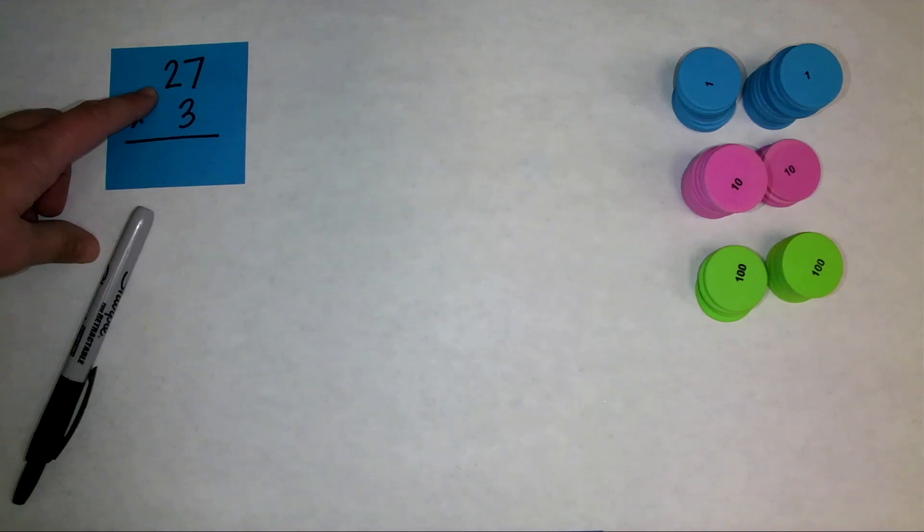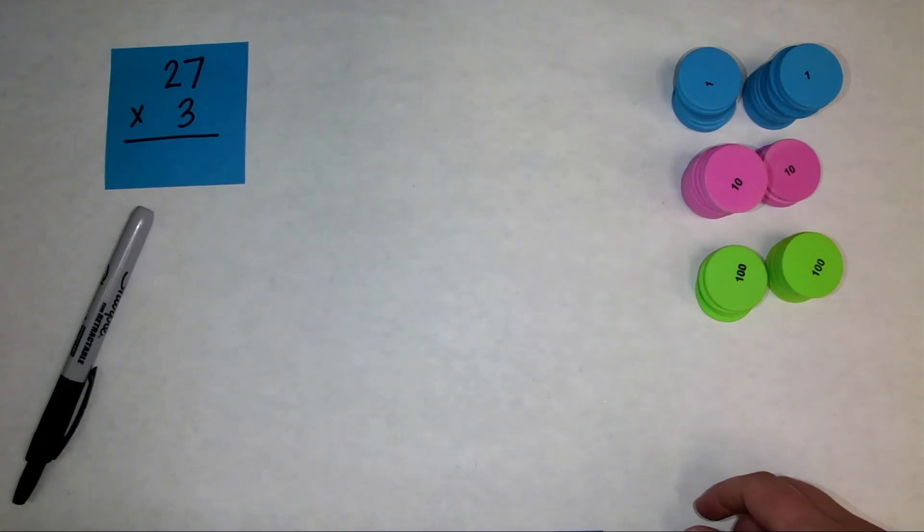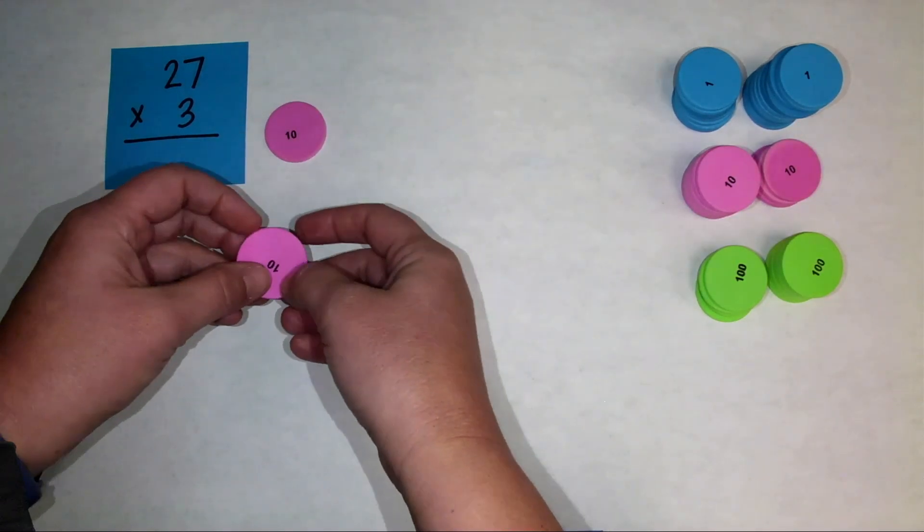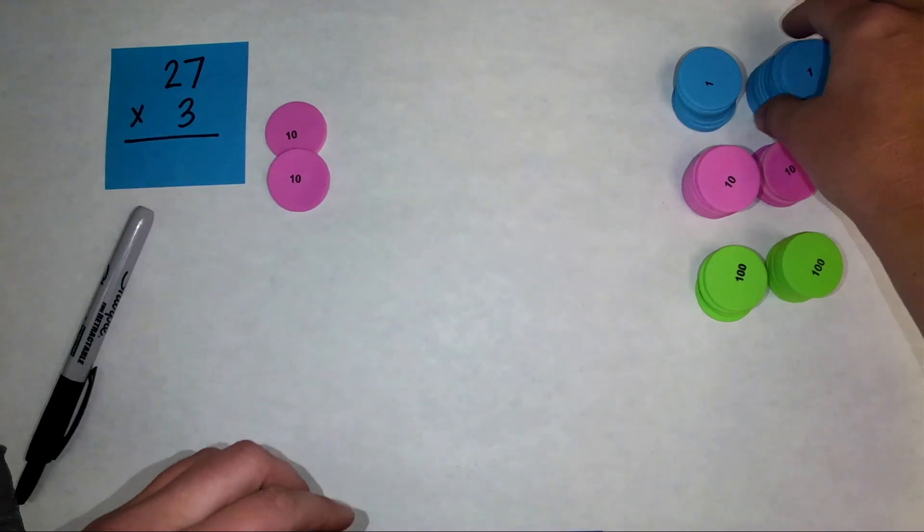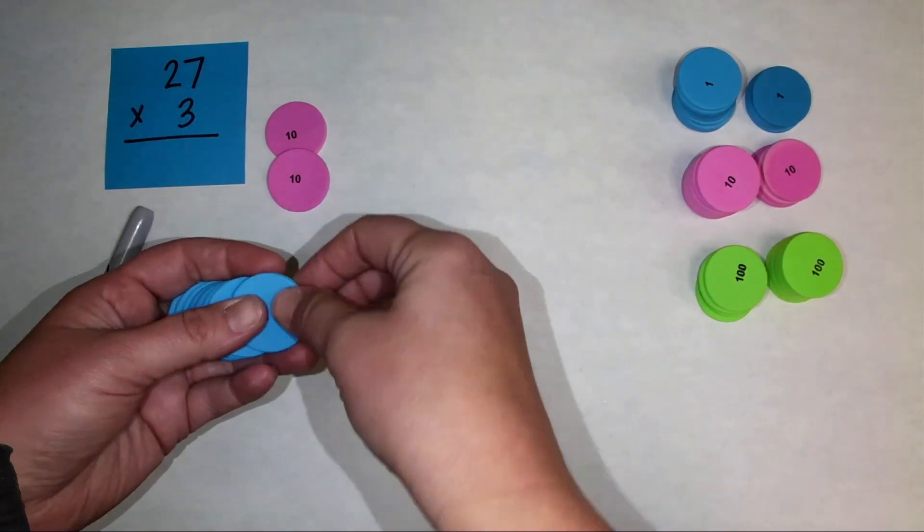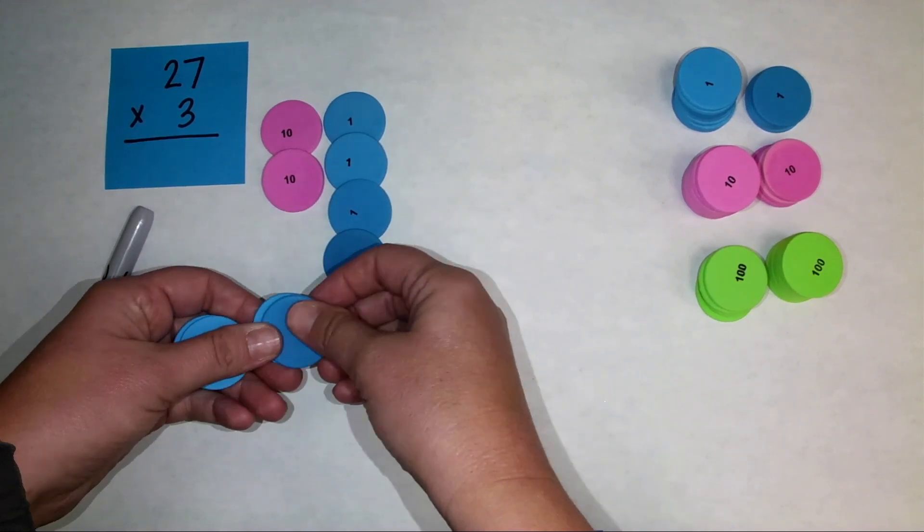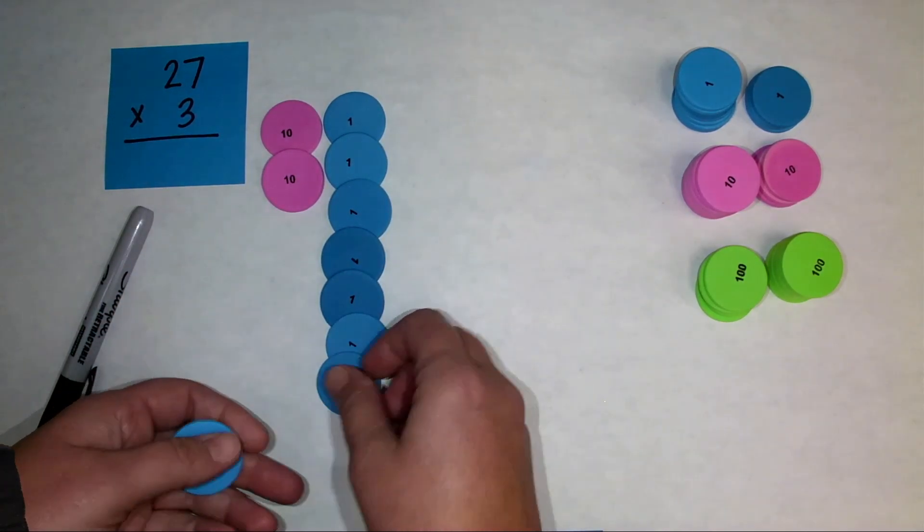So here is our problem, 27 times 3. I am going to show three groups of 27 using these place value disks. So I said I'm going to show three groups of 27. So first I'll show one group of 27. So here are two tens, and then I will show seven ones: three, four, five, six, seven.